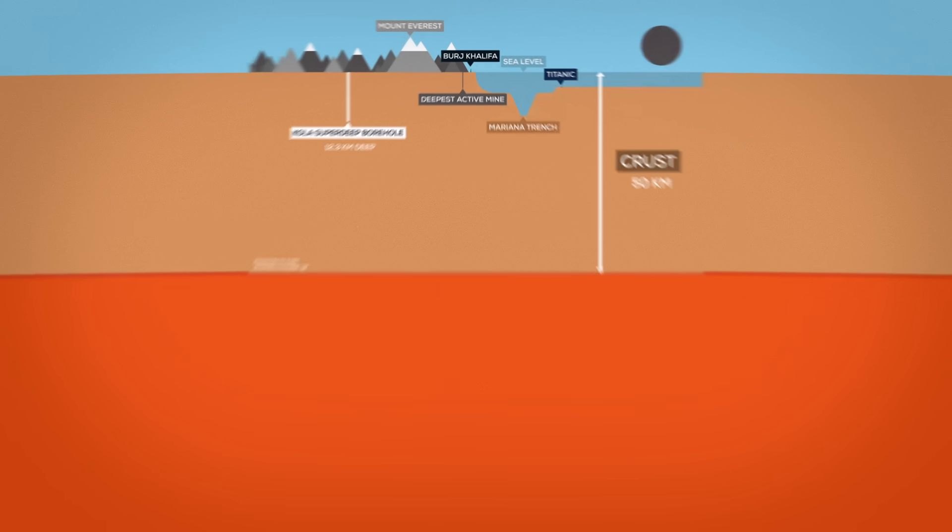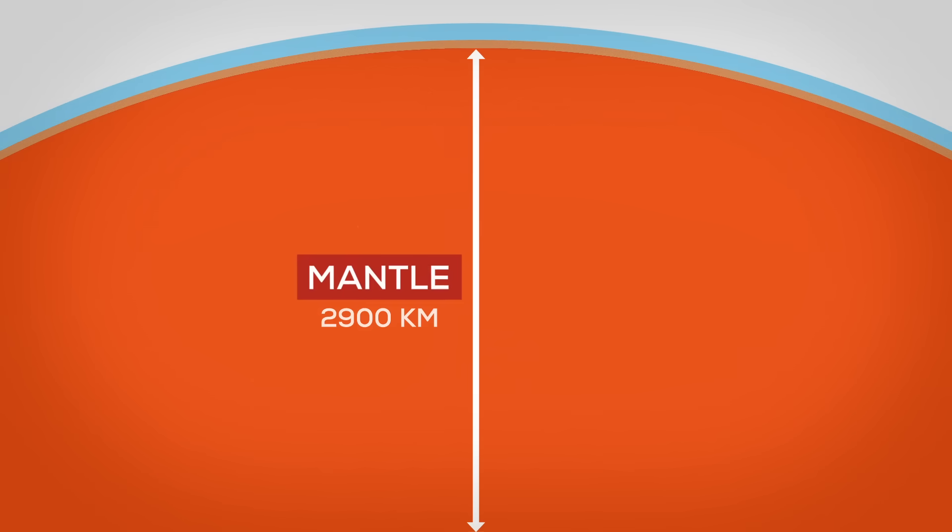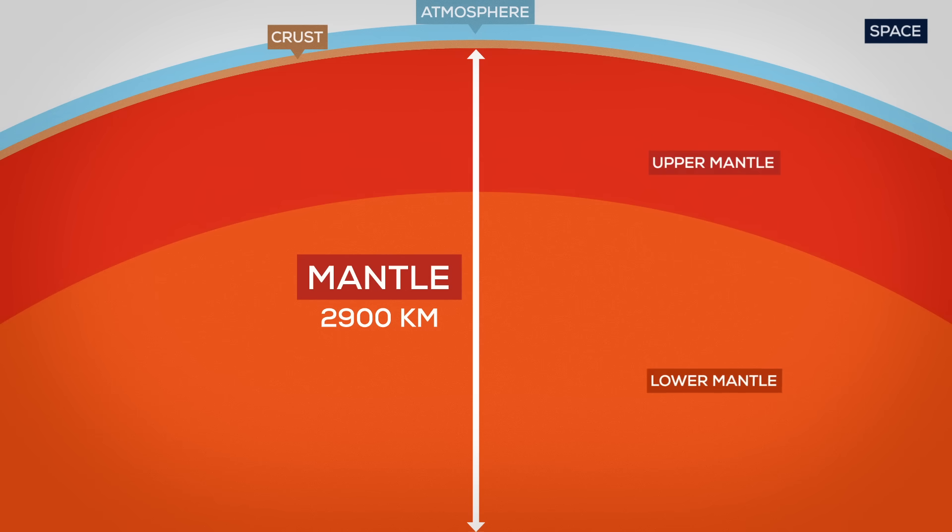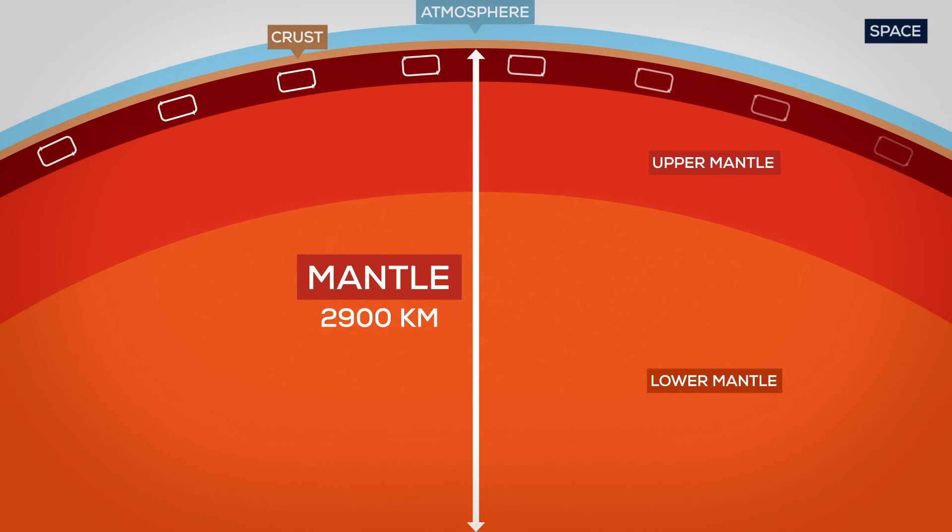After the crust comes the mantle. It's a silicate rocky shell and about 2,900 km thick. The mantle consists of the upper mantle and the lower mantle. The upper mantle has different regions too. Its upper part, which is viscous and carries the crust, is called the lithosphere. After that, there comes the asthenosphere, which consists of less mobile, mostly solid material. The lower mantle reaches deep down to the outer core of Earth.